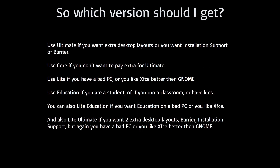So which version should you get? Get Ultimate if you want the extra desktop layouts, installation support, or need Barrier. Get Core if you don't want to pay extra, you know what you're doing and don't need installation support, and don't care about the extra desktop layouts. Use Zorin OS Lite if you have a lower-end PC or just like XFCE — its XFCE experience almost perfectly emulates the GNOME desktop and is one of the most modern XFCE desktops around. Get Education if you're a student, run a classroom, or have kids. Get Lite Education if you want Education but have a low-end PC or prefer XFCE. Get Lite Ultimate if you want the extra desktop layouts and Barrier but prefer XFCE.